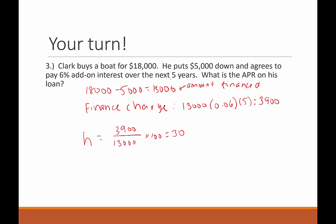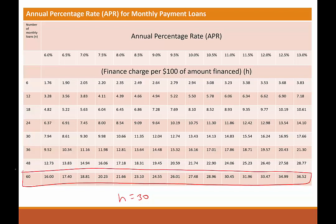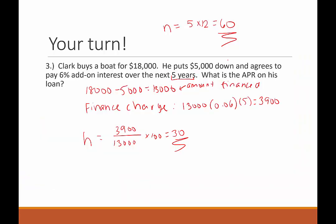The loan is five years, so N equals 60 months. Our H value is 30. Looking at the 60-month row, we have 28.96 and 30.45 — 30.45 is closer to 30. Going up that column, we see an APR of 11%. So the APR on Clark's loan is 11% — just as bad as the Griffins.